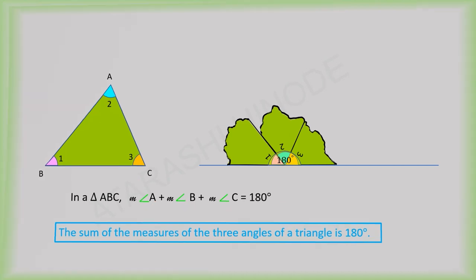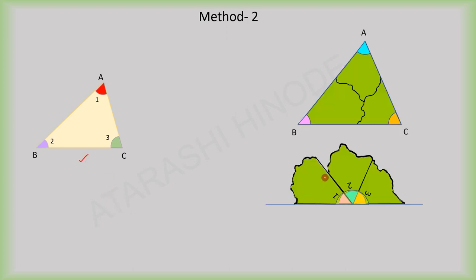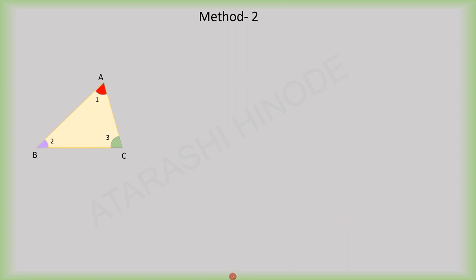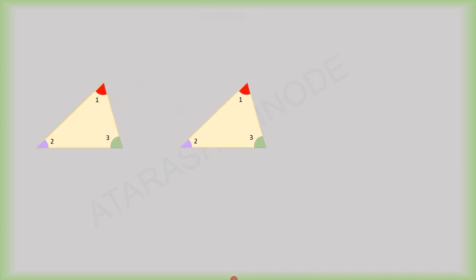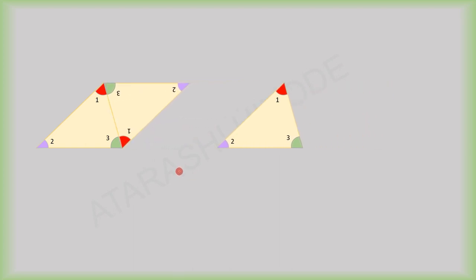Let us go to the second method. Here also I have taken one triangle. In the first method, I had taken one triangle and cut out the three angles and rearranged them, but here I am taking two more copies of this triangle. Keep the first triangle as it is, move the second triangle very close to the first triangle like this, and the third also.